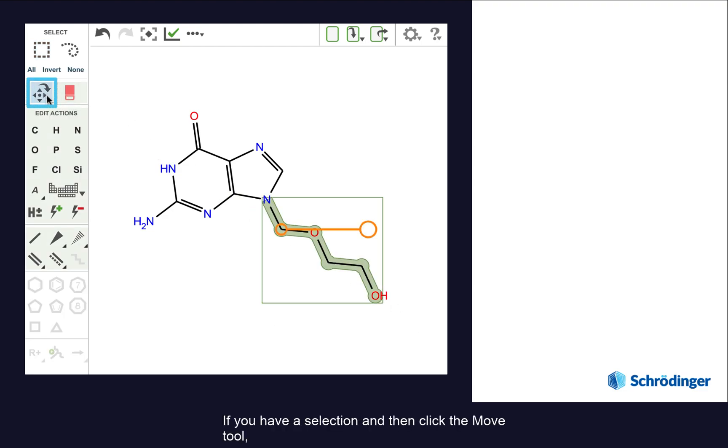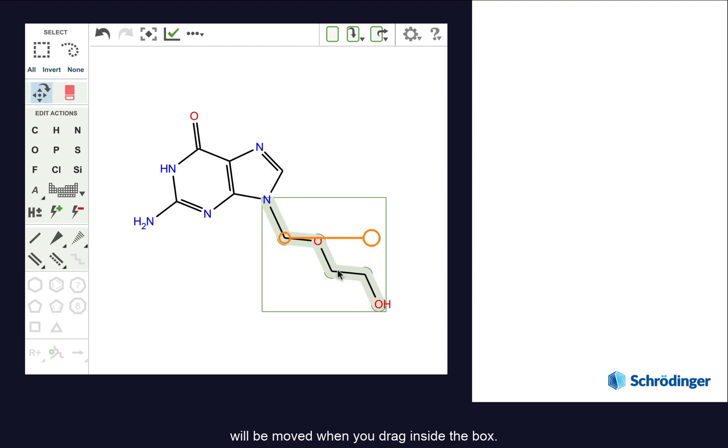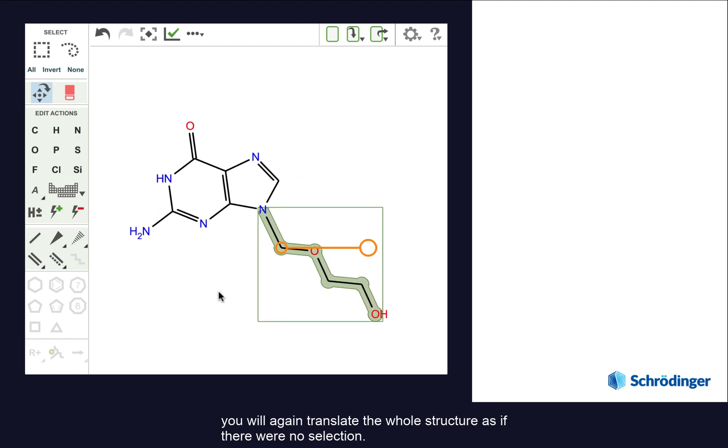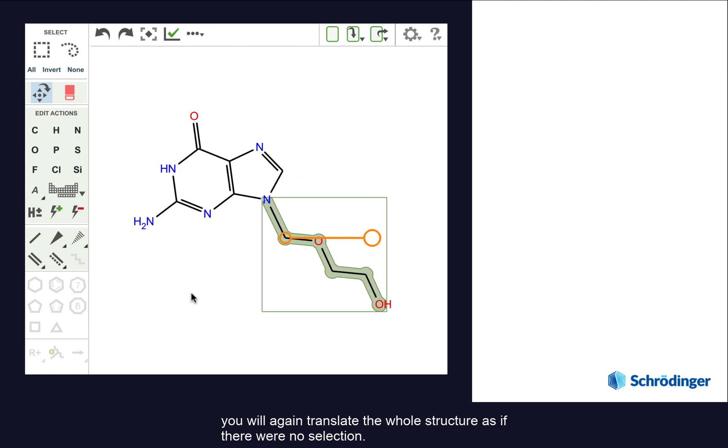If you have a selection and then click the move tool, then only the selected portion of your molecule will be moved when you drag inside the box. If you press and drag outside the selection box, you will again translate the whole structure as if there were a new selection.